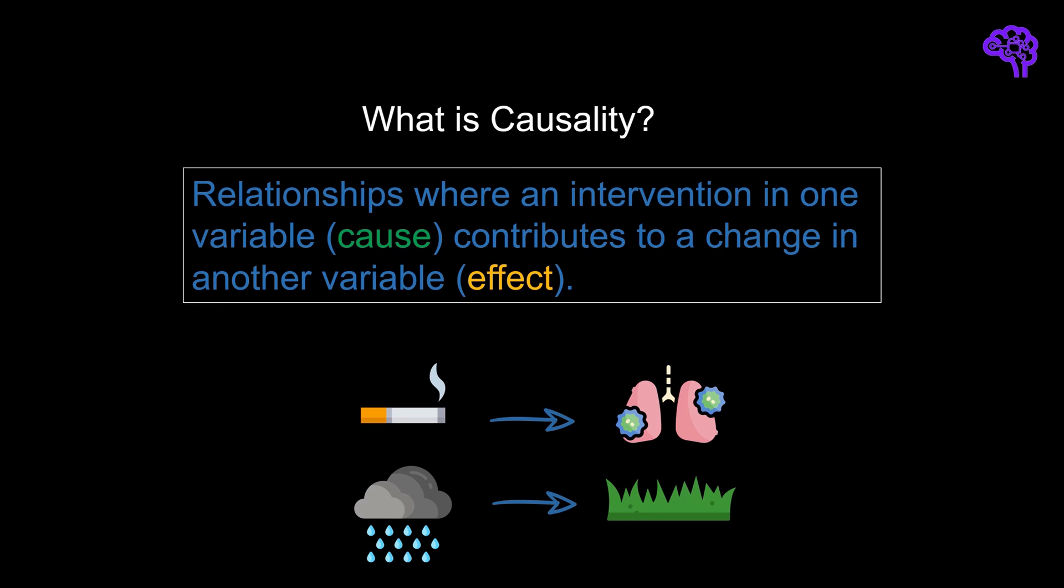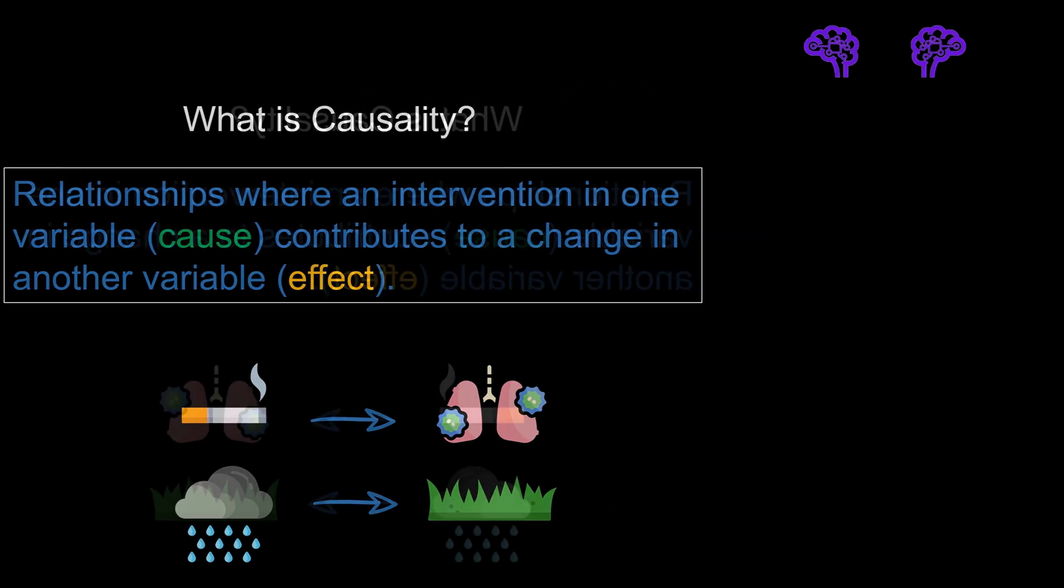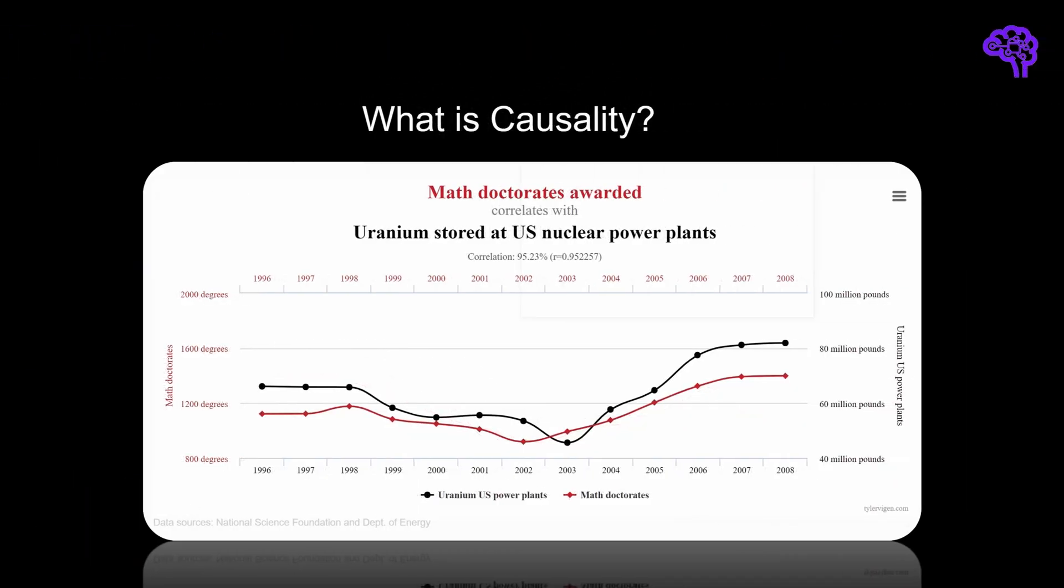But in fact, it's not that easy to figure out if it's actually a causal relationship or just correlation. I'm pretty sure many of you have seen this website that shows many examples why correlation is not causation. For example, the variable math doctorates awarded highly correlates with the uranium stored at US nuclear power plants. Obviously those two have nothing in common. Okay, so correlation can be quite misleading for finding cause and effect relationships. Correlation just tells us if variables rise and fall together.